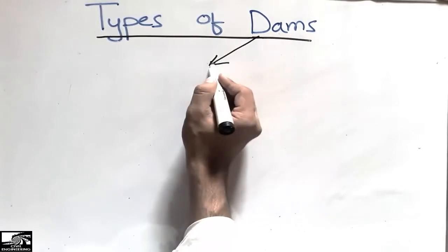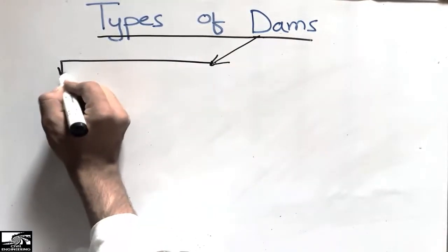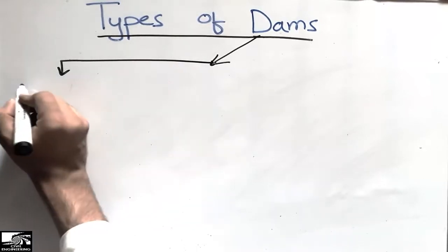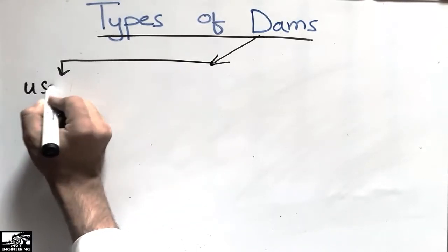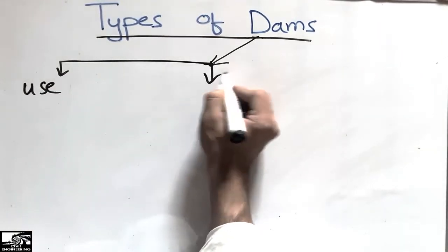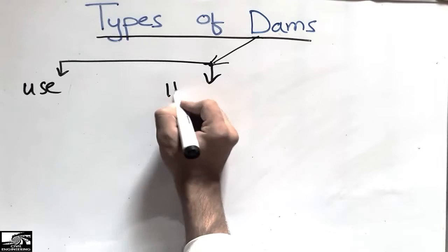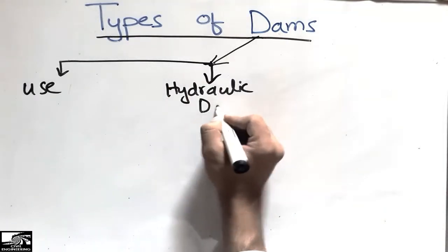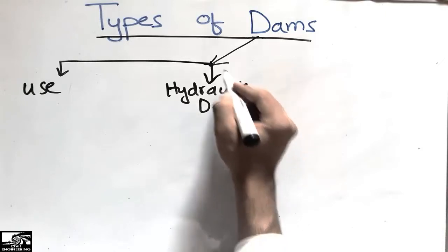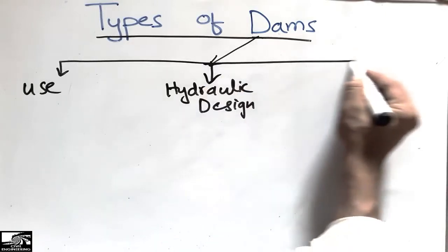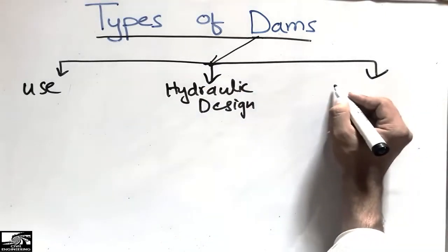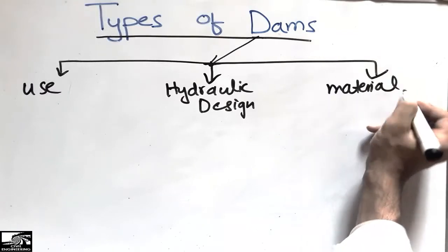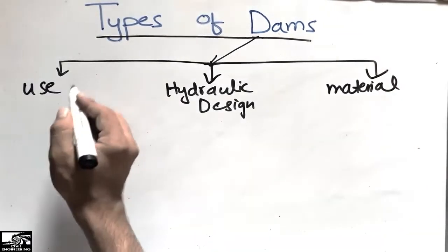There are three types of dam classification. The first is the classification of dams according to their use. The second is the classification of dams according to the hydraulic design. The third is the classification of dams according to the material used.